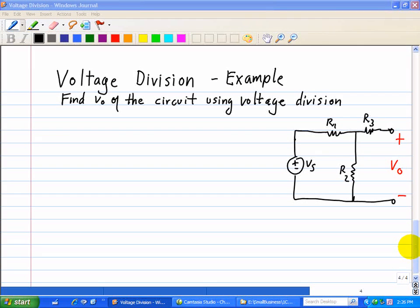Here's another example of applying voltage division to this circuit. Here we have a circuit where we want to find the output voltage VO. Well, we should note that this is open right here. So the current through R3, that is the current through R3 is equal to 0.